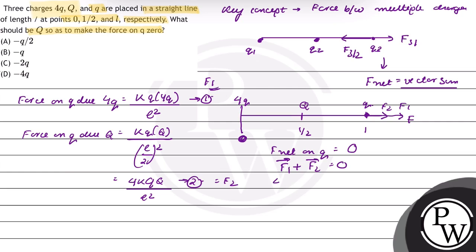Or 4K q capital Q upon L square plus K q 4Q upon L square equals 0. So small q capital Q plus small q whole square should be equal to 0, or small q capital Q plus Q equals 0.